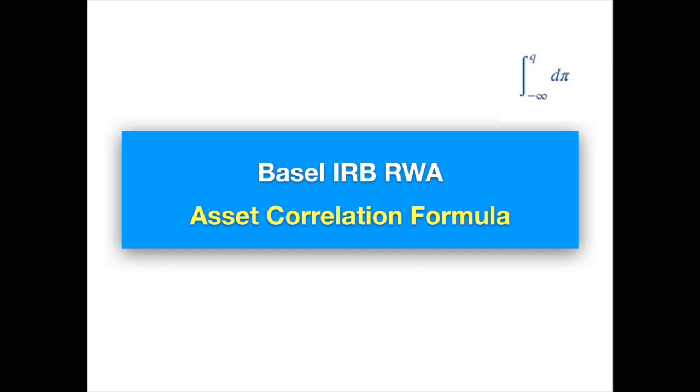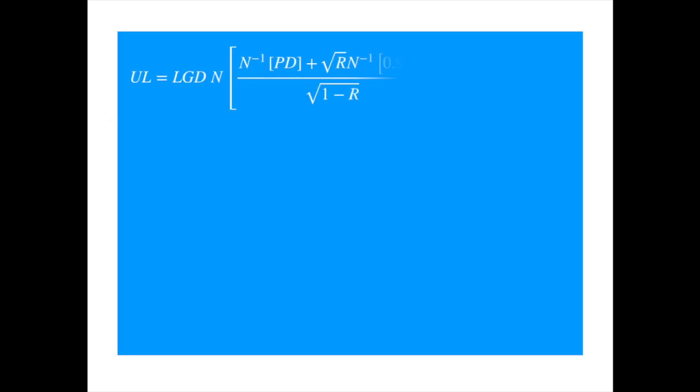Let's first recap where the IRB formula fits into the IRB capital requirements. We reproduce the IRB formula. This formula is used to calculate the capital requirements for credit risk. In our toolbox, we have the unexpected loss. This is the amount by which the loss at the 99.9% confidence level exceeds the expected loss.